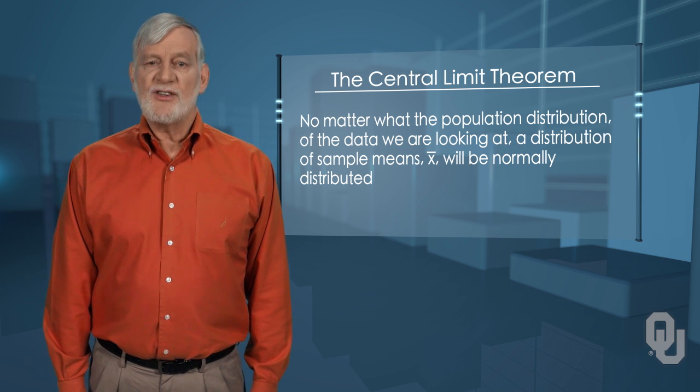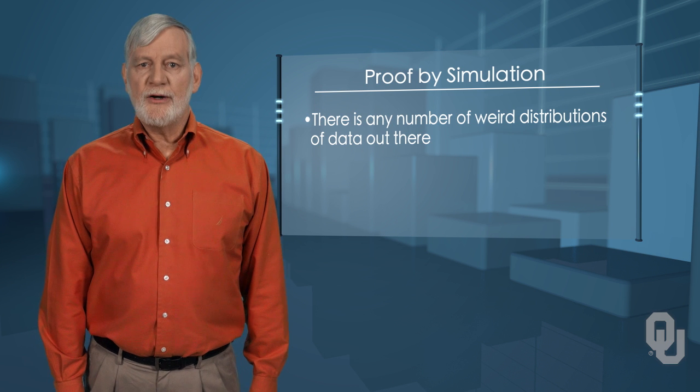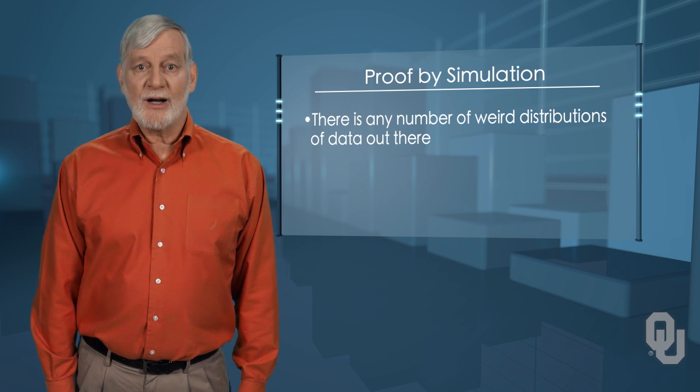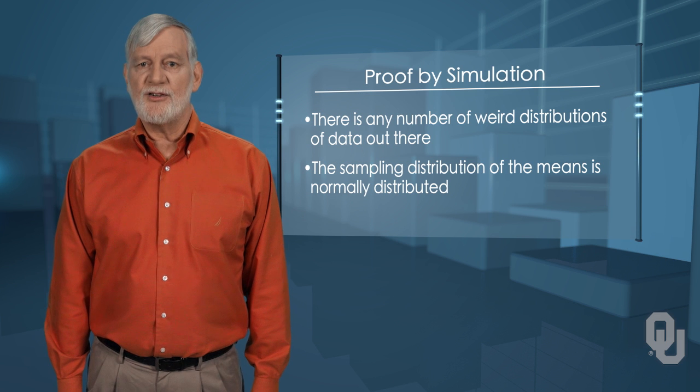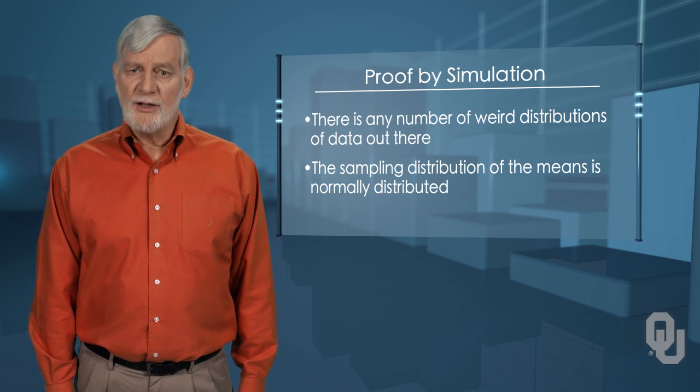This proposition seems fantastical. There is any number of weird distributions of data out there, and regardless, we can be assured that the sampling distribution of the means is normally distributed.